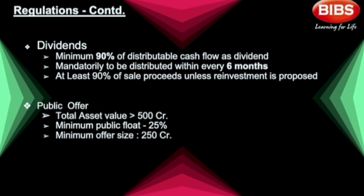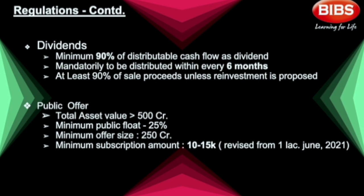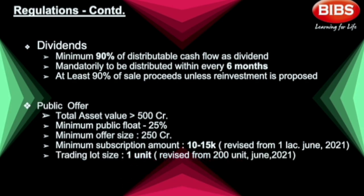SEBI has amended the application amount and trading lot size, effective from June 2021. The minimum investment amount into an IPO can now be between Rs 10,000 and Rs 15,000, revised from Rs 1 lakh. The minimum trading lot size has also been revised to just 1 unit, previously it was 200 units per lot.